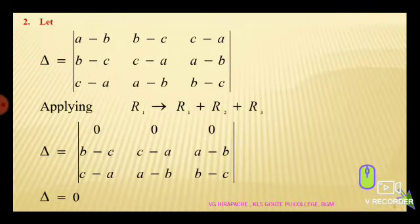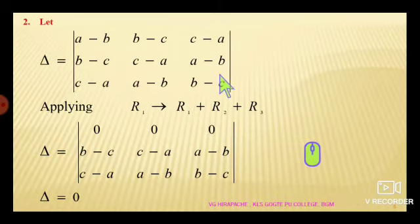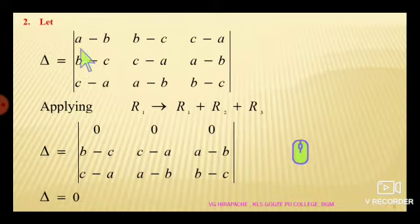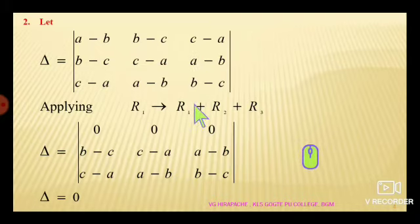Moving to the next question. Prove that the determinant with first row a-b, b-c, c-a; second row elements b-c, c-a, a-b; and third row elements c-a, a-b, b-c is equal to zero. Let me write the given delta with first column consisting a-b, b-c, c-a; second column elements b-c, c-a, a-b; and third column c-a, a-b, b-c.